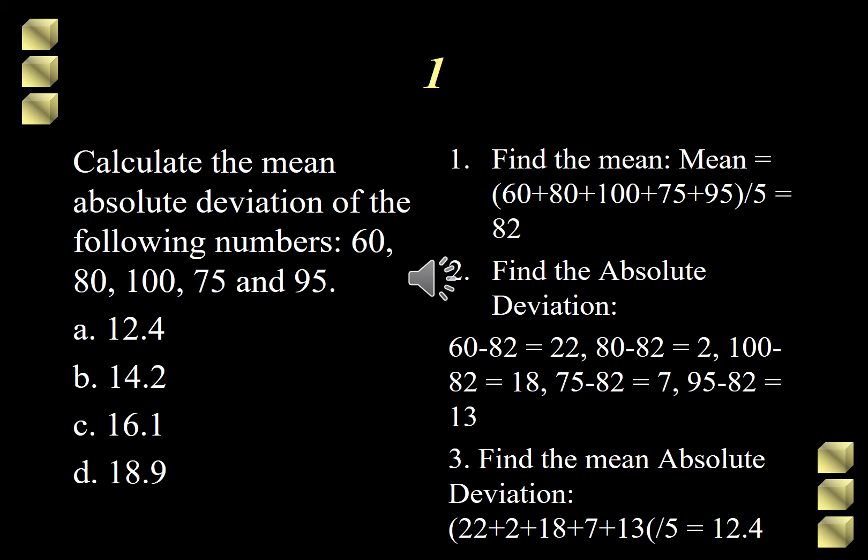So our first score is 60, 60 minus 82 should yield negative 22, but we get the absolute value, so we have positive 22. 80 minus 82, that's positive 2. 100 minus 82 is 18. 75 minus 82 is 7, and 95 minus 82 is 13.